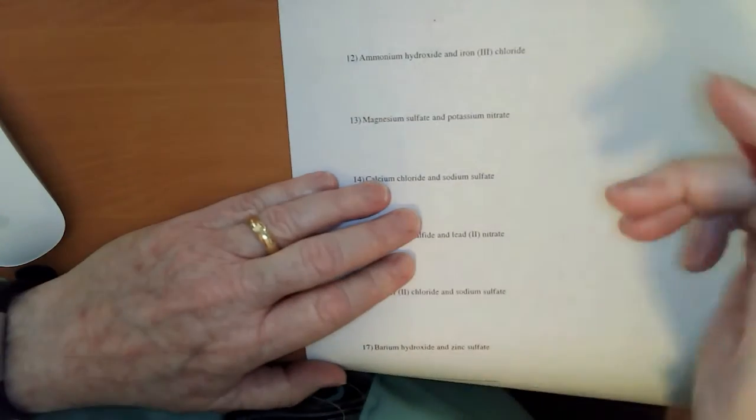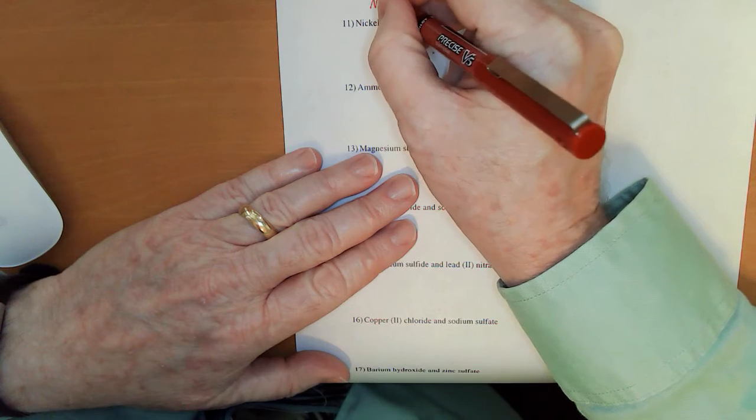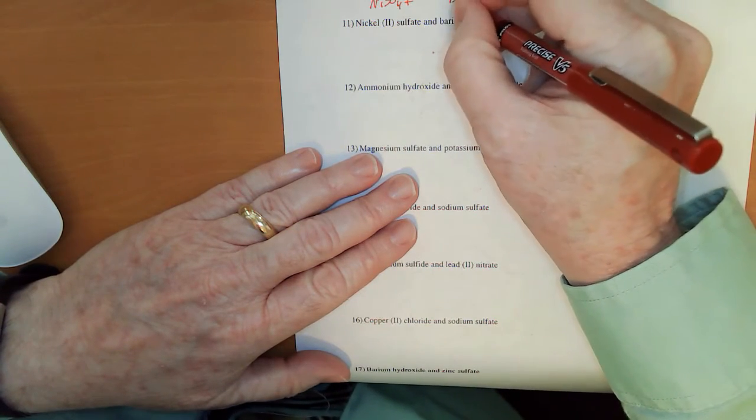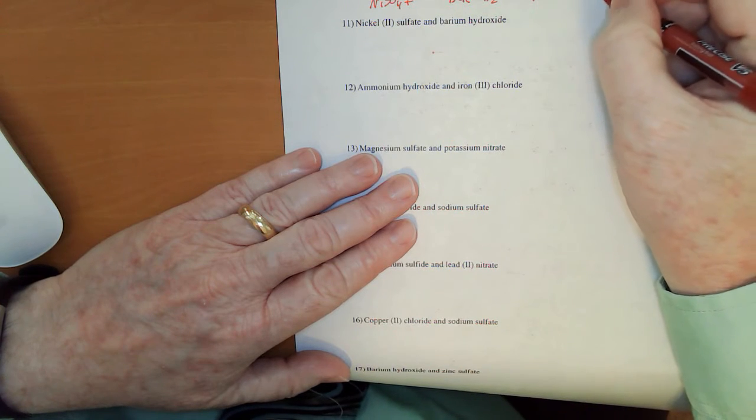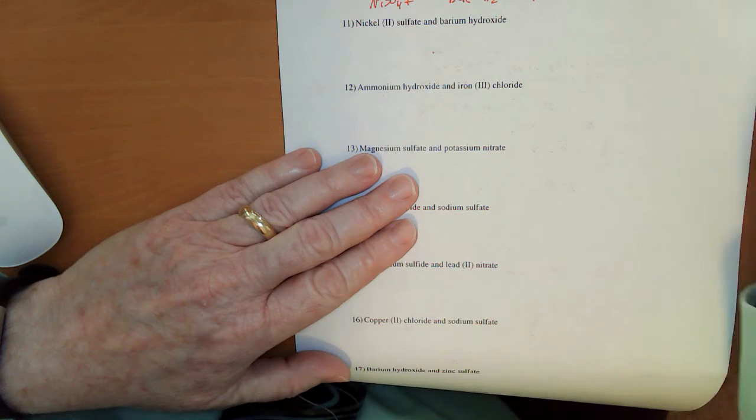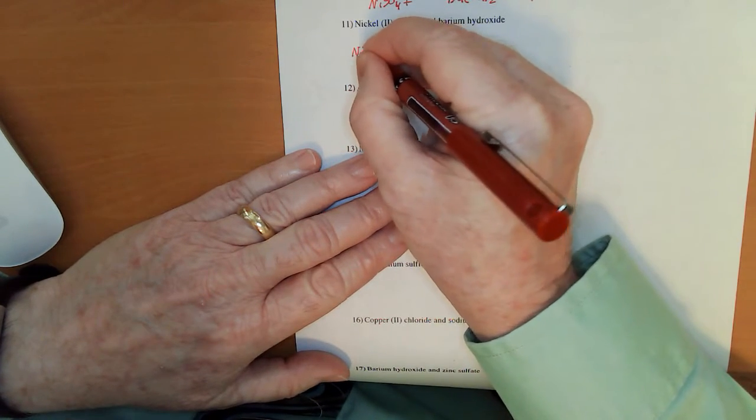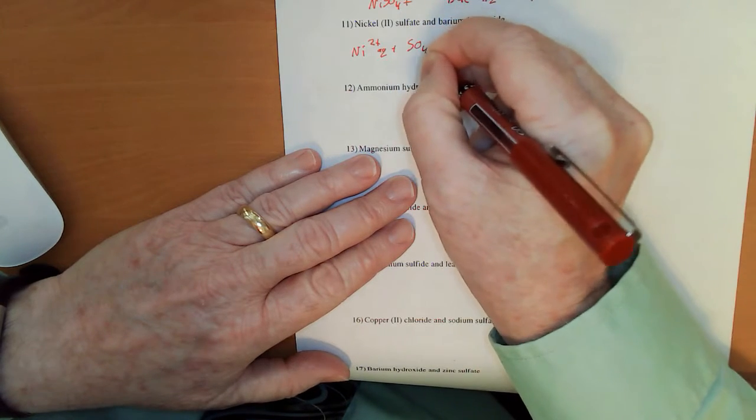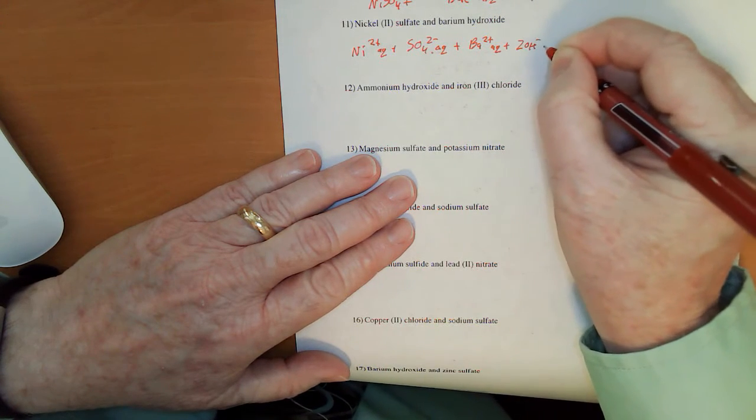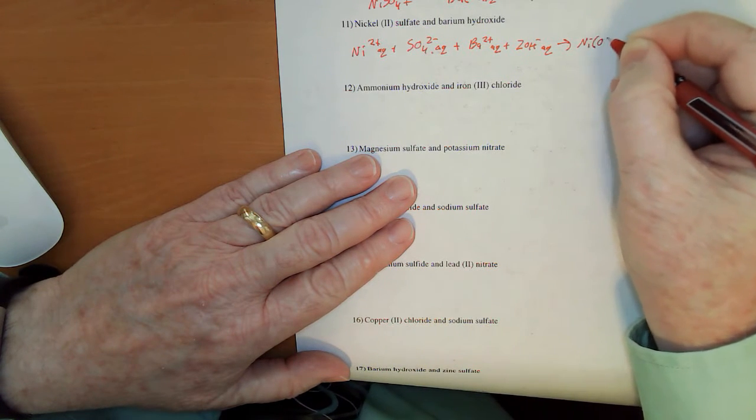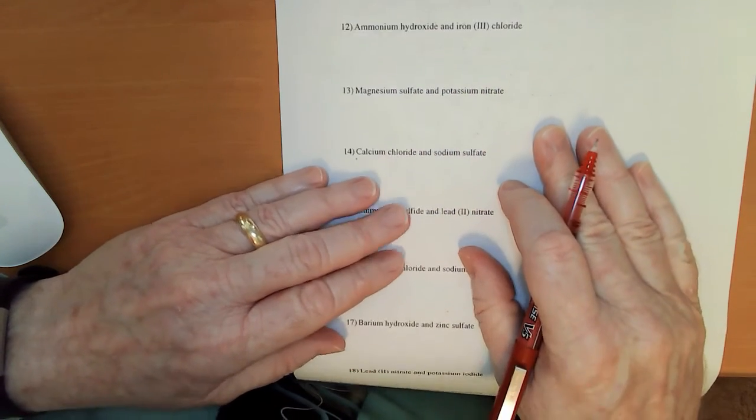There are a couple here that get a little more complicated. Nickel 2 sulfate with barium hydroxide. So, nickel 2 sulfate is NiSO4. Barium hydroxide is Ba OH sub 2. When those come together, I get Ni OH sub 2 and BaSO4. And both of those we saw on the front precipitate. So, what we have here is Ni 2 plus aqueous plus SO4 2 minus aqueous plus Ba 2 plus aqueous plus 2 OH minus aqueous to give me Ni OH sub 2 solid and BaSO4 solid.